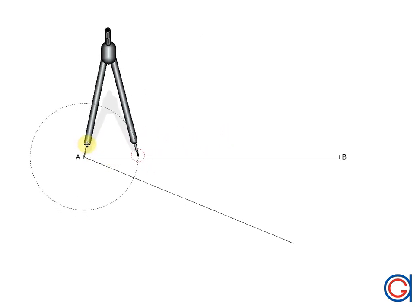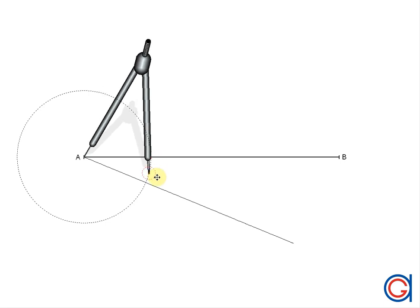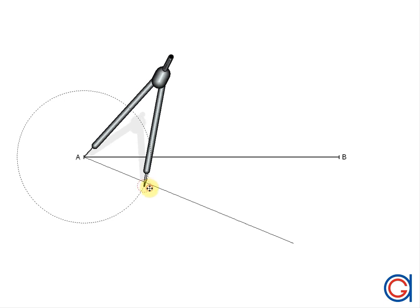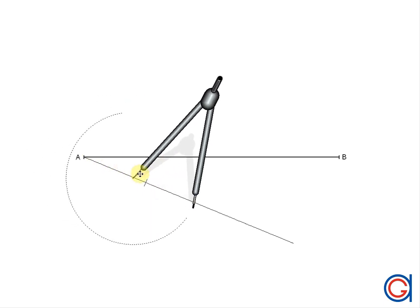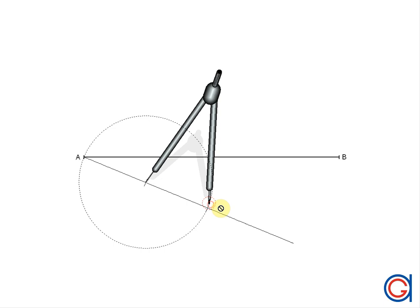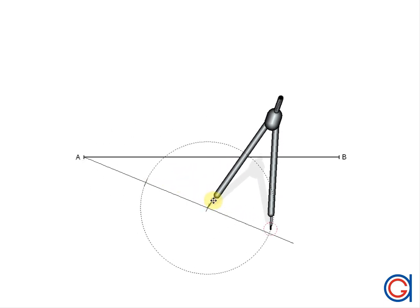Now using our compass which we will set to a certain length, 4cm for example, we will proceed to scribe three arcs on this line using the compass as we want to divide our segment into three equal parts. This is the second arc and here is the third arc.